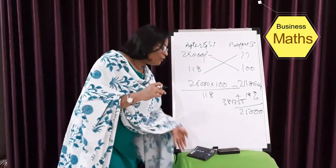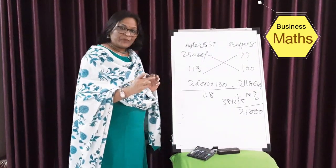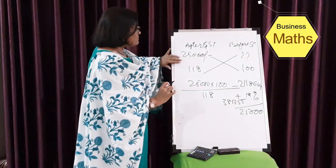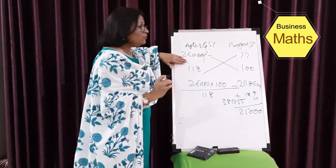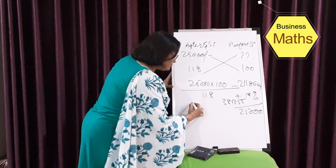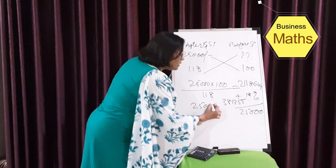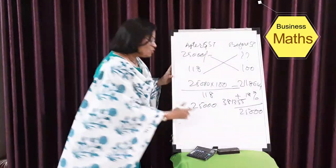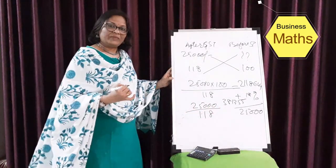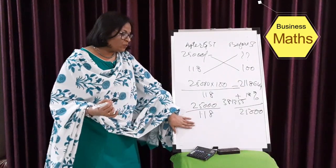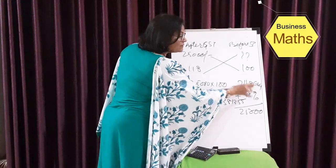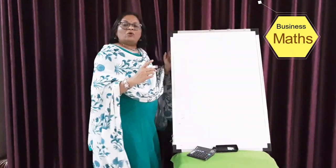There is another easy shortcut for solving this. When you know that a value is inclusive of some percentage, you simply divide by 1 plus that percentage. Here, 25,000 is including 18% GST, so divide 25,000 by 1.18, and your answer again comes to 21,186.44.